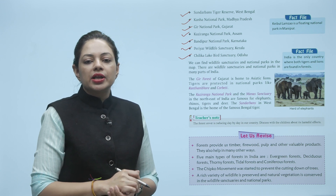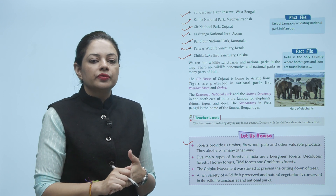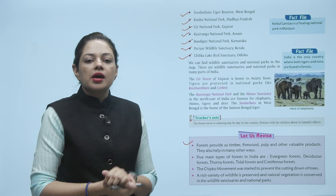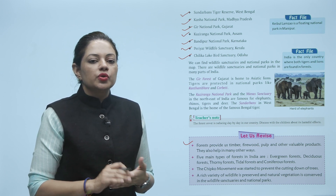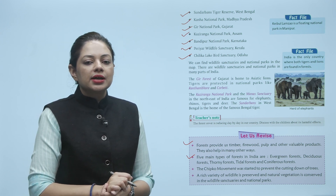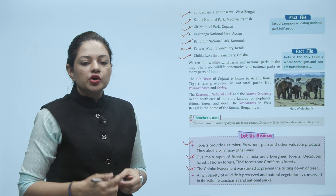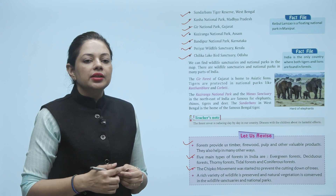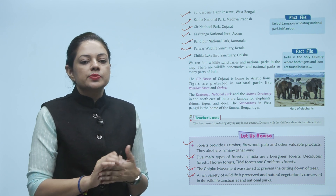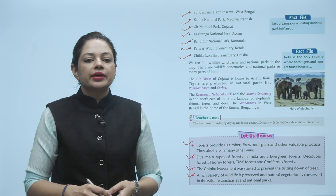Let us revise the chapter. Forests provide timber, firewood, pulp and other valuable products, and help in many other ways. The five main types of forests in India are Evergreen, Deciduous, Thorny, Tidal and Coniferous. The Chipko movement was started to prevent the cutting down of trees. A rich variety of wildlife is preserved and natural vegetation is conserved in wildlife sanctuaries and national parks.